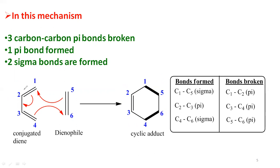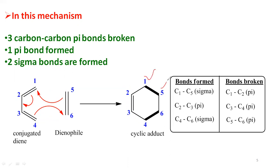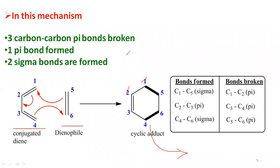These numbers are given for understanding purposes. The new sigma bonds are formed between the first and fifth positions, and between the fourth and sixth positions, and a new pi bond is formed between the second and third carbon atoms. This numbering is based on the substrate molecule numbers. When giving the IUPAC name for the product, this molecule is called 1-cyclohexene.